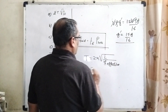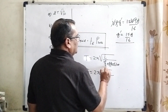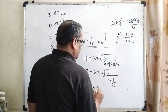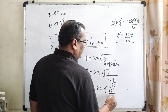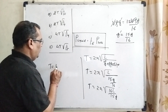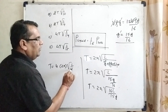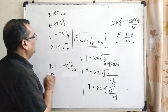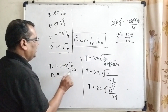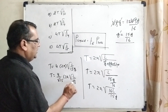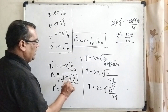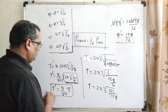Now substituting this value into the pendulum formula: T' = 2π√(L / G_effective) = 2π√(L / (15G/16)) = 2π√(16L / 15G). The √16 gives 4, so T' = 4 × 2π√(L/15G) = (4/√15) × 2π√(L/G). Since 2π√(L/G) = T, we get T' = 4T/√15, which can be written as 4T√(1/15).